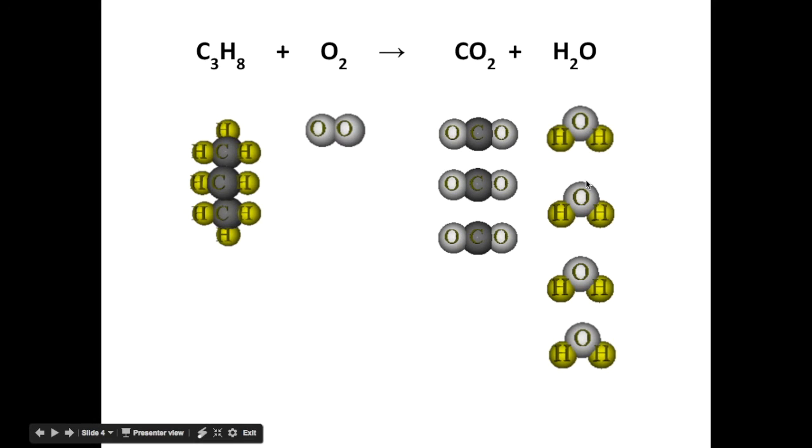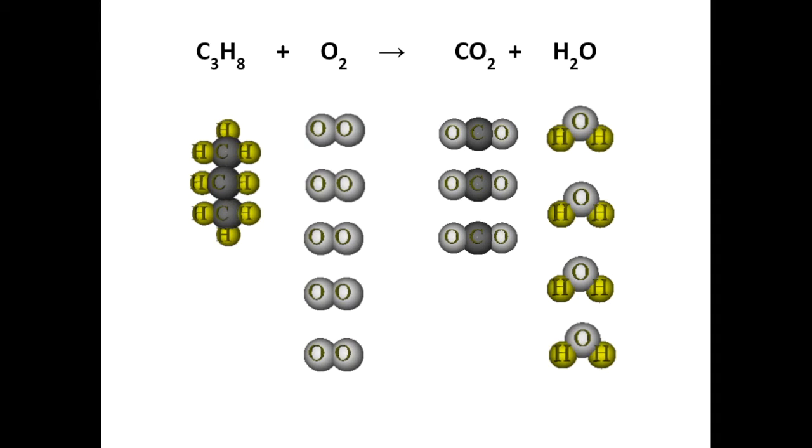So we've got one, two, three, four, five, six, seven, eight, nine, ten. So if there's two in every oxygen molecule, we're going to need five of those. So five O2's, three CO2's, and four waters.